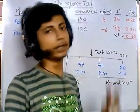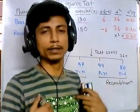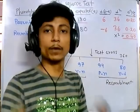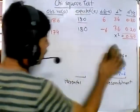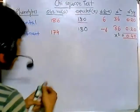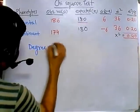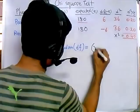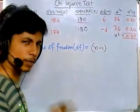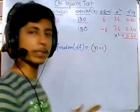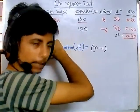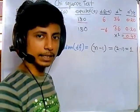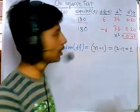The second important thing is to find the degree of freedom for this data set. The degree of freedom (df) is calculated as the number of data sets (n) minus 1. Here we have two different data sets — parental and recombinant — so the degree of freedom is 2 minus 1, which equals 1. So the degree of freedom is 1 for this data set, and the chi-square value is 0.40.